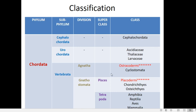In Tetrapoda there are four classes: Amphibia, Reptilia, Aves, and Mammalia. Reptiles are the crawling tetrapods. Reptilia belongs to phylum Chordata, subphylum Vertebrata, division Gnathostomata, superclass Tetrapoda, and holds the status of a class. There are almost 6,000 species of reptiles identified so far.